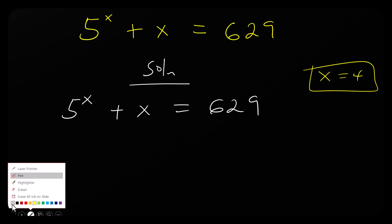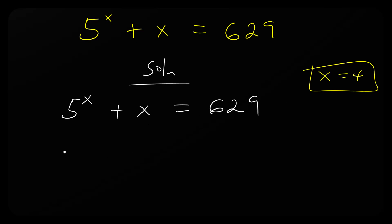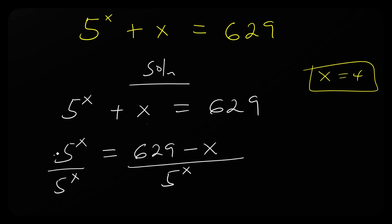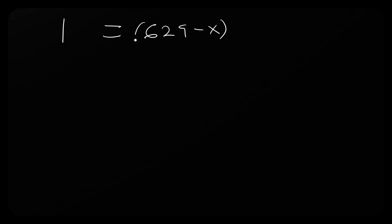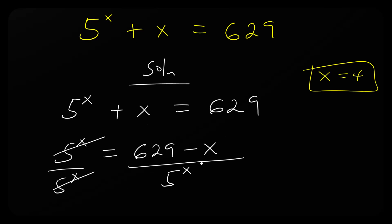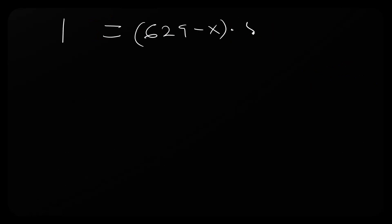Let's pay attention here. What we are going to do is send x to the right hand side, so we have 5 to the power x equals 629 minus x. Now let's send the 5^x to the right hand side by dividing, so we have 1 equals (629 minus x) times 5 to the power minus x, writing 1/5^x as 5^(−x).